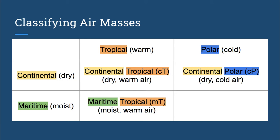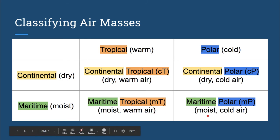The final combination is then maritime and polar. Maritime polar air is both moist and cold. Moist from maritime, cold from polar. On a map you'll see it represented by lowercase m, capital P.